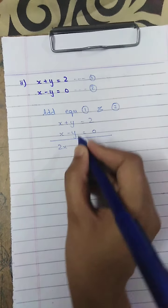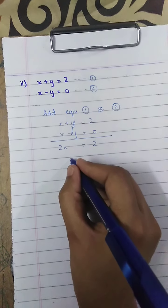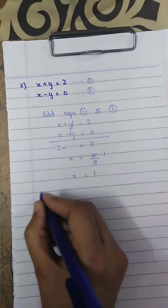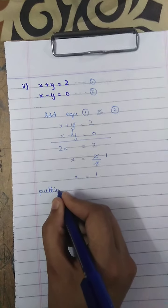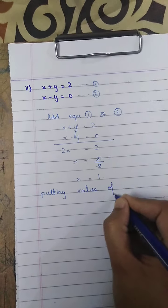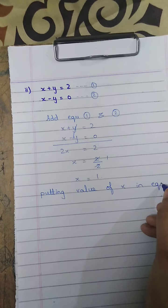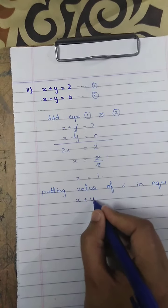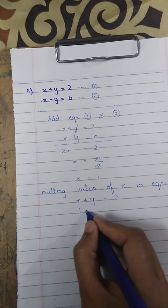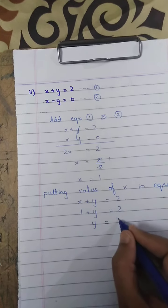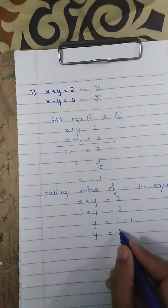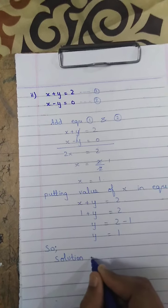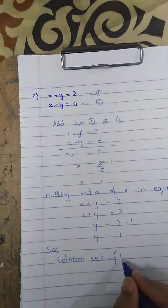Adding: x plus y equals 2, and x minus y equals 0. It becomes 2x, and the y terms cancel, giving 2x equals 2, so x equals 1. Now putting x equals 1 into equation 1: 1 plus y equals 2, so y equals 2 minus 1, giving y equals 1. The solution set is (1, 1).